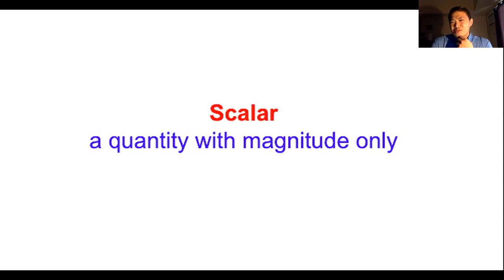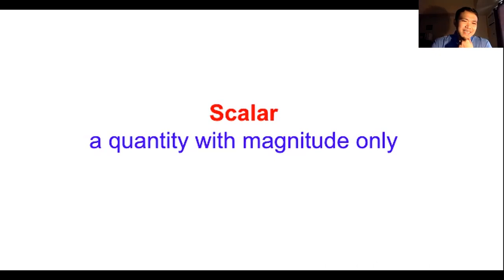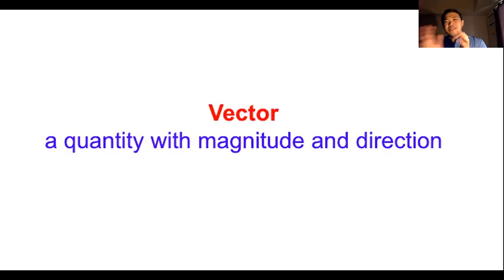Those quantities are scalar — we don't need to know the direction of those. A scalar quantity can be described by a number (magnitude only), and of course don't forget the unit. Vector quantities have both magnitude and direction.